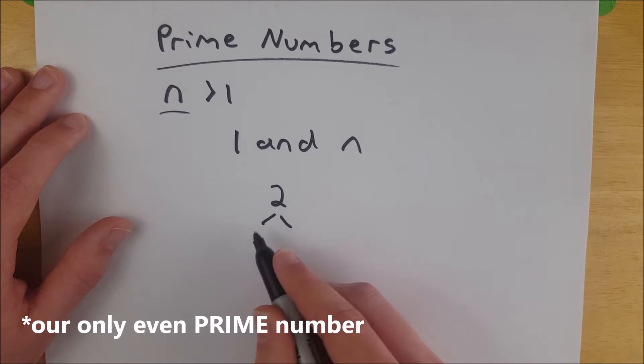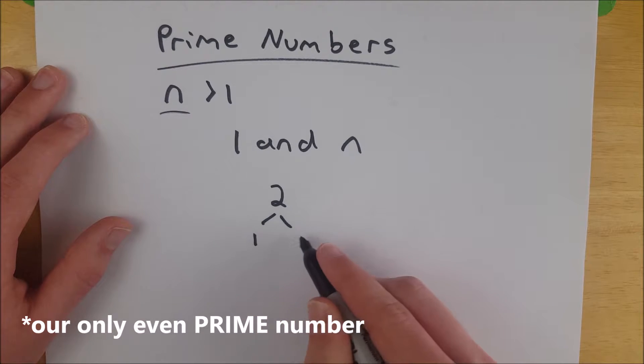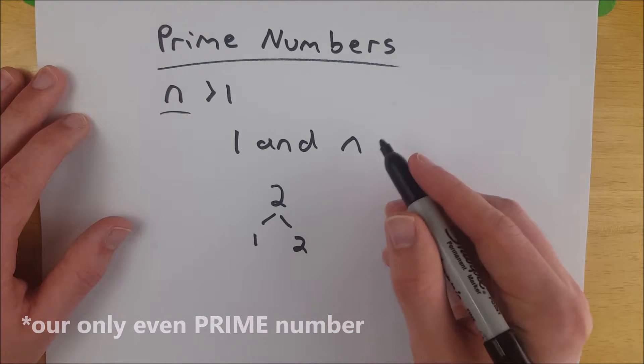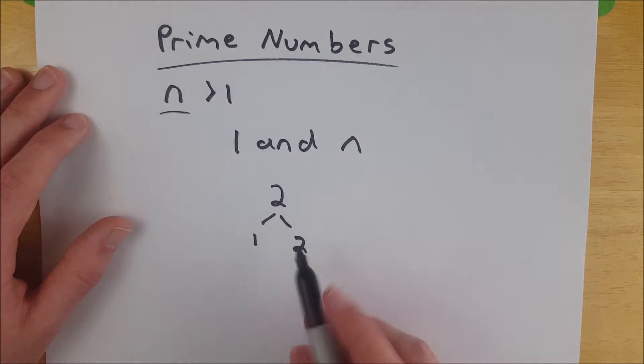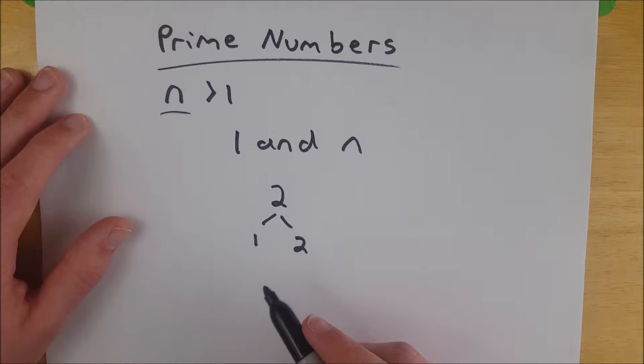Two's only factors are one and two. One and n, n in this case is two. So it's just two and one. Those are the only numbers that go into two.